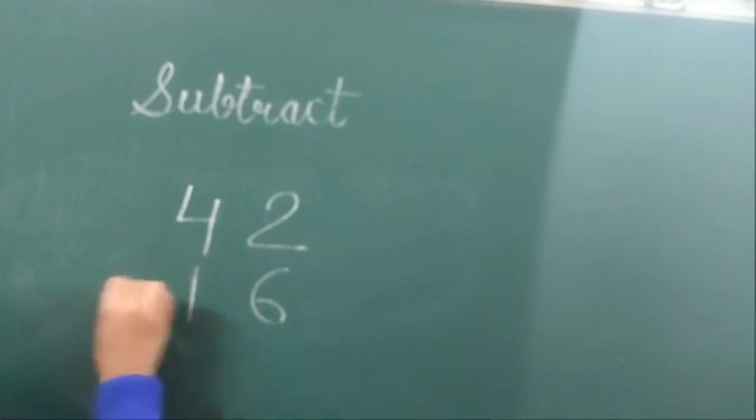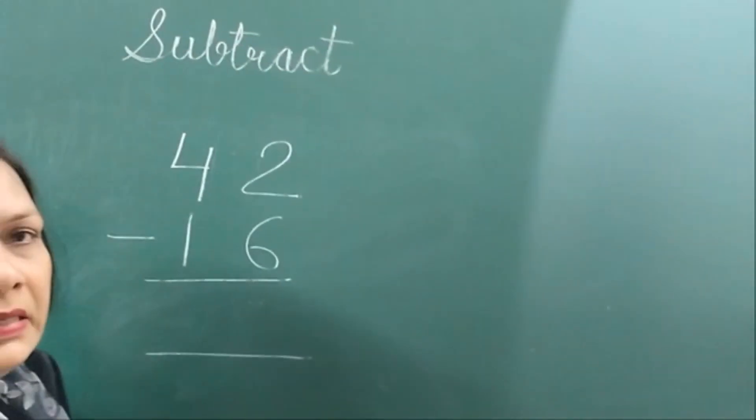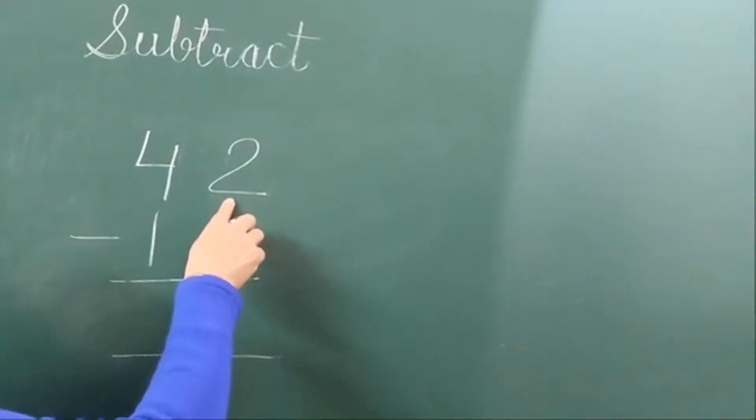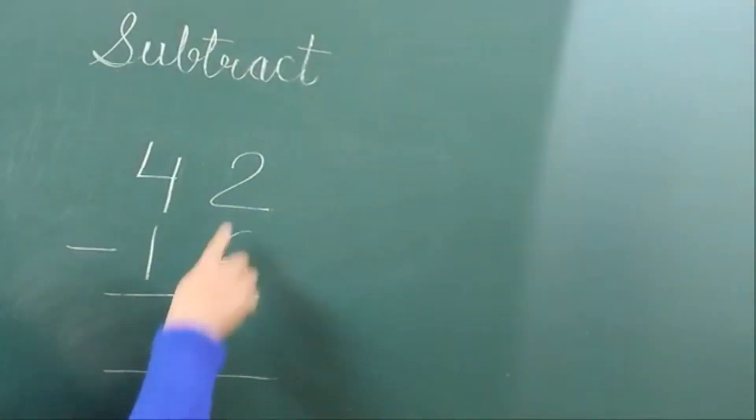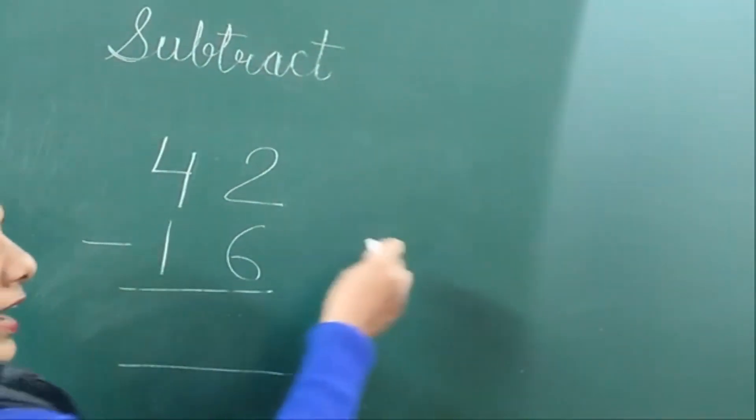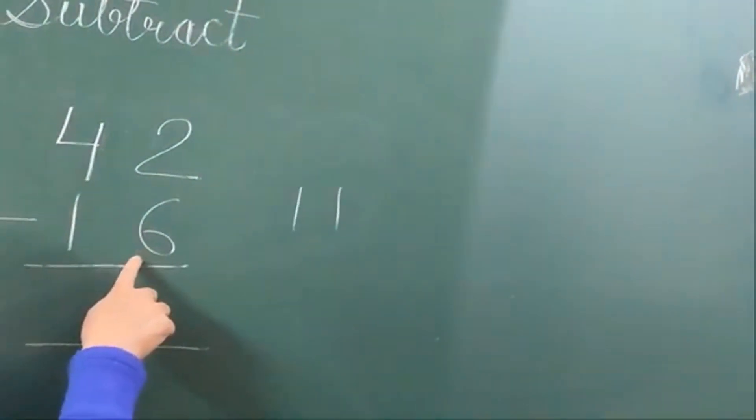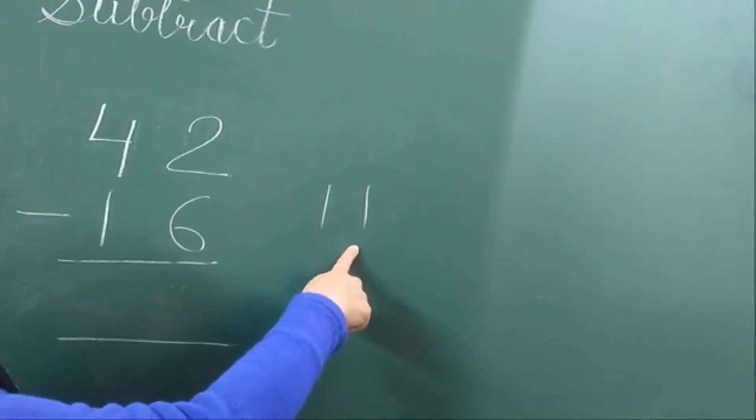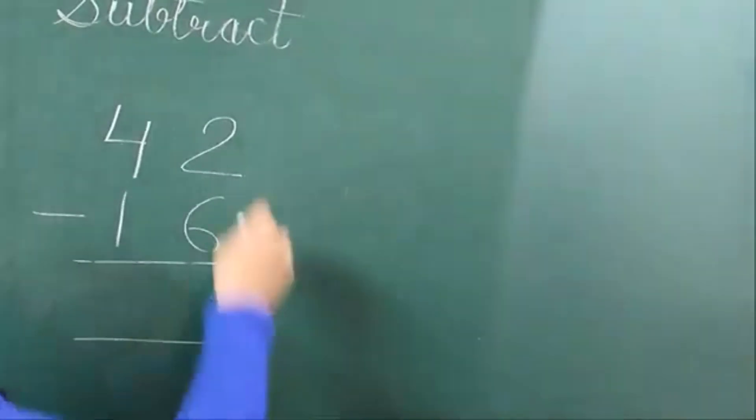42 minus 16. Look at this carefully. Here 2 is given, and we have to subtract 6 from 2. Is it possible? I have only 2 lines, and we have to cut 6 lines. Is it possible? No, it's not possible. So what will we do?